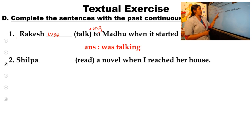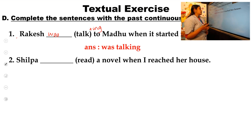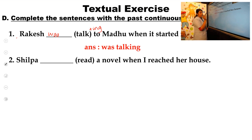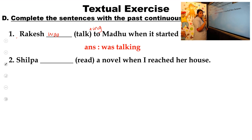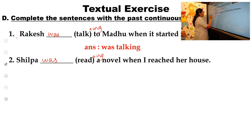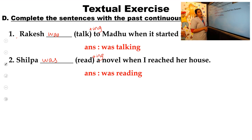Second question: 'Shilpa ___ (read) a novel when I reached her house.' First we check the subject — Shilpa is singular, so we use 'was'. The main verb is 'read', so we add ing: 'reading'. The answer is: Shilpa was reading a novel when I reached her house.